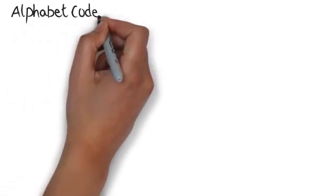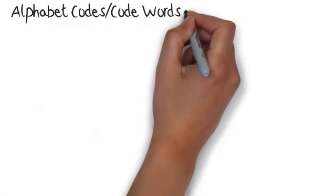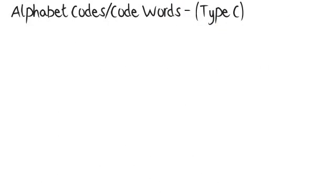Alphabet codes — code words type C. With this type of question you are normally given the alphabet to help you, but sometimes you won't be. If there isn't an alphabet on your test paper, write one down to help you.